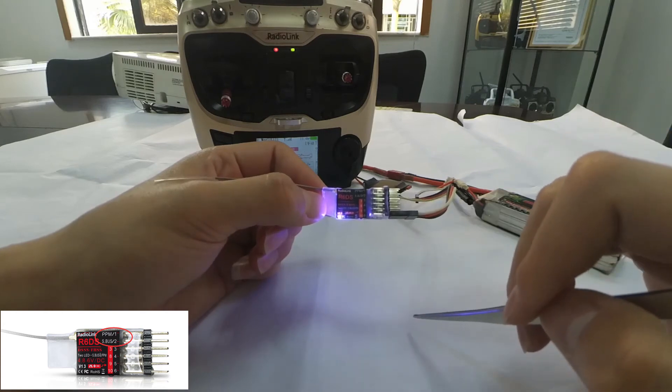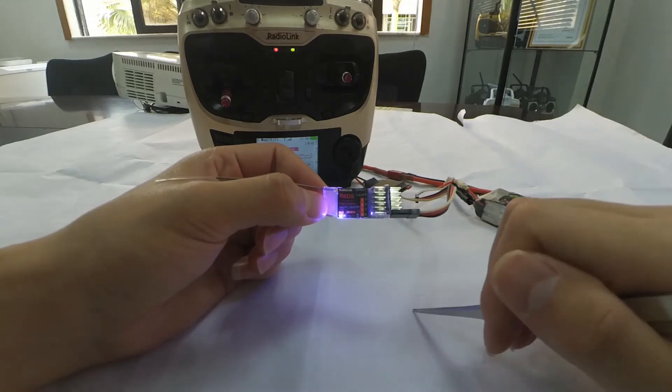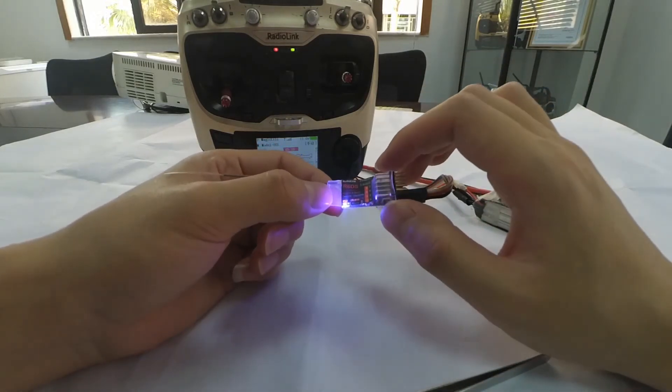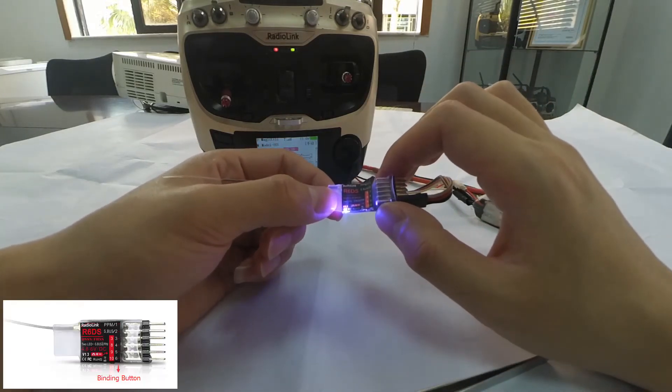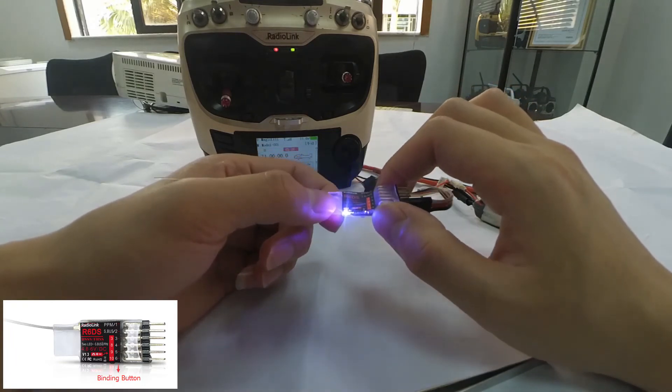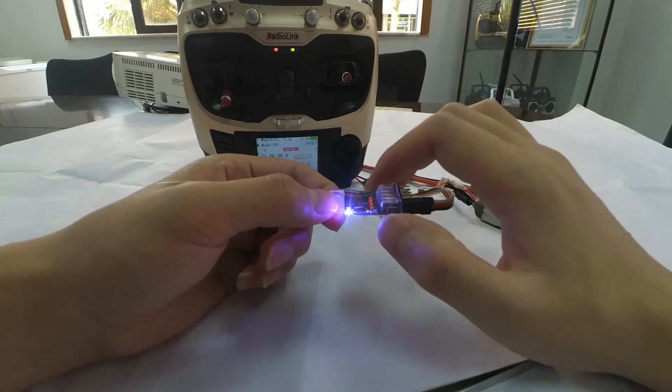If we want to change the signal output to PWM, we need to change the working mode. Short press the binding button two times, wait one second. We can see that the LED turns red, meaning the current signal output is PWM.